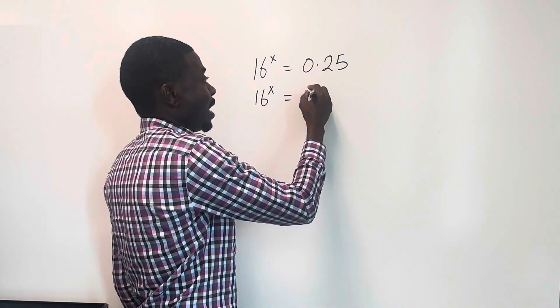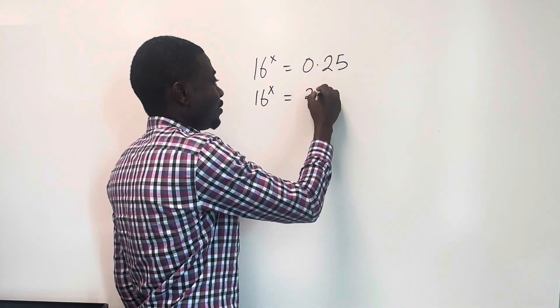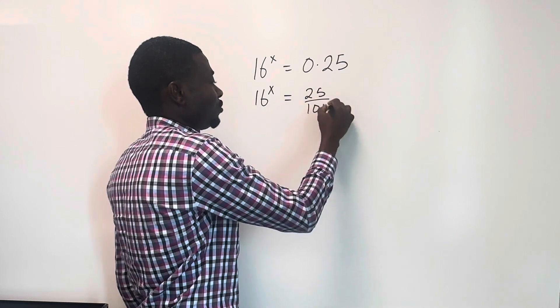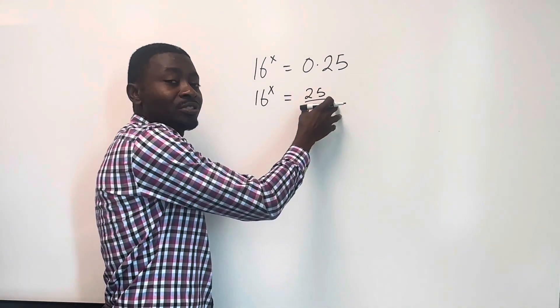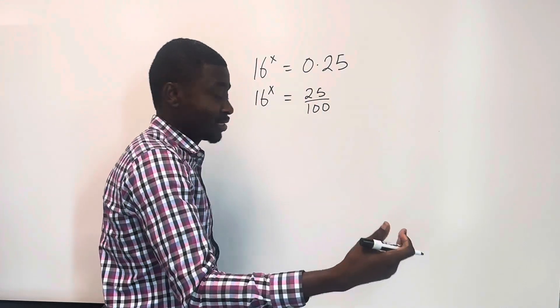So 0.25 can also be written as 25 over 100. 25 over 100. So the next thing we're going to do from here, we're going to reduce this fraction now to its lowest term.